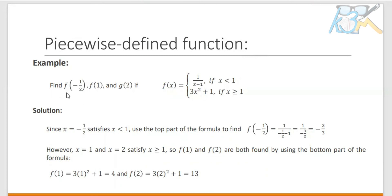Find f of negative 1 half, f of 1, and f of 2 if the function f of x equals 1 over x minus 1 if x is less than 1, or f of x equals 3x squared plus 1 if x is greater than or equal to 1.